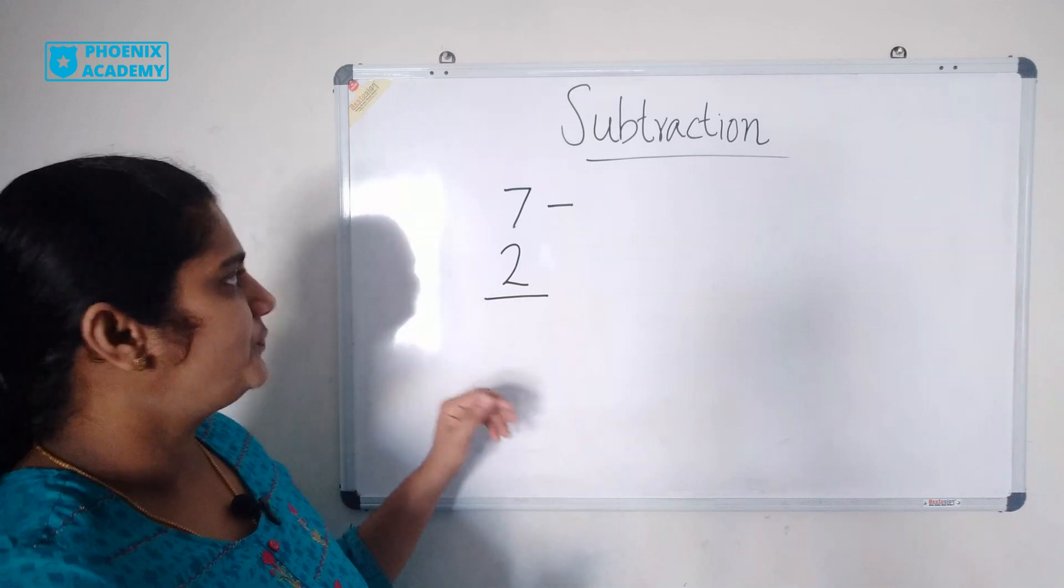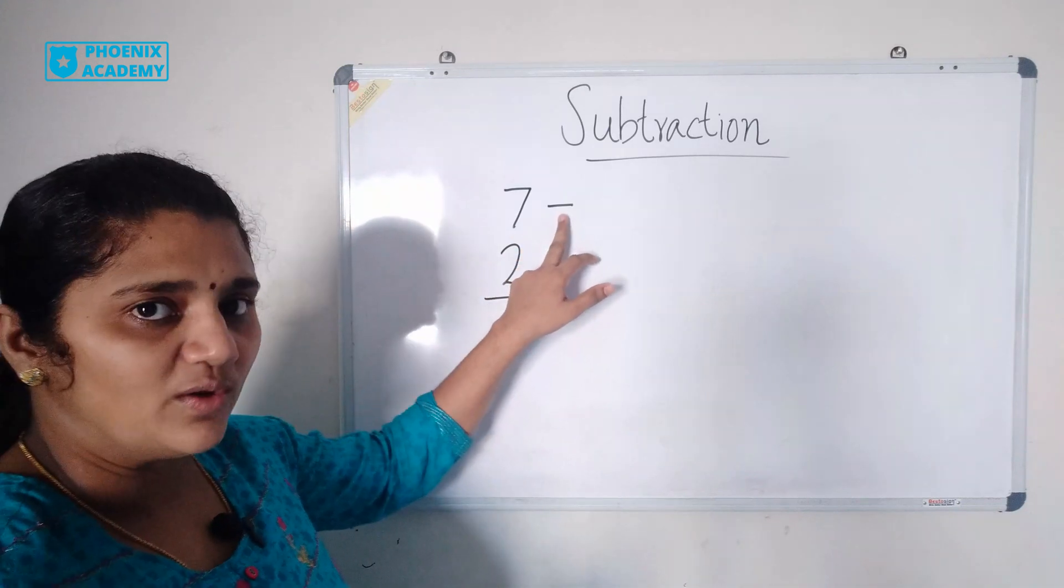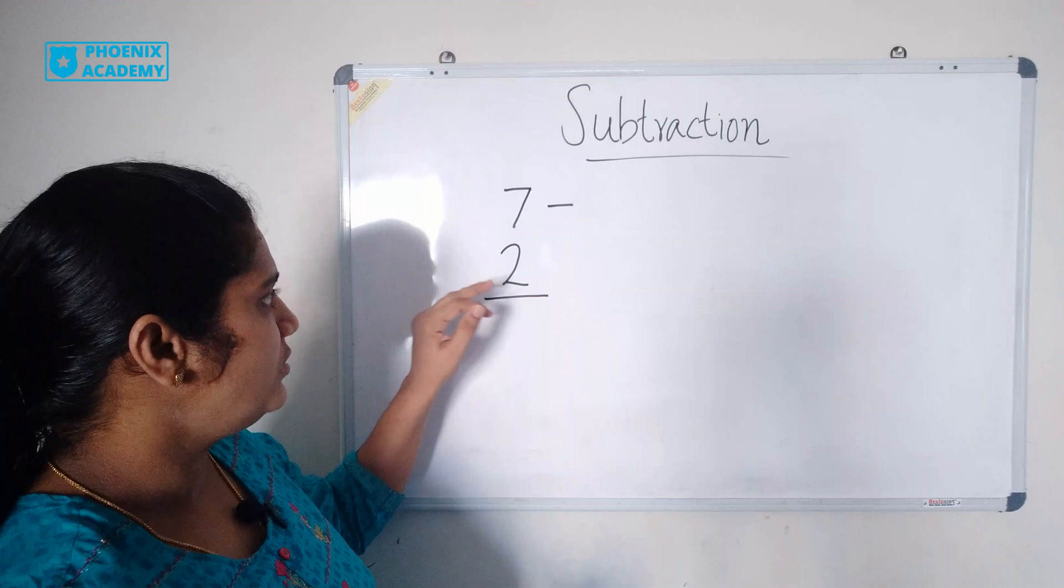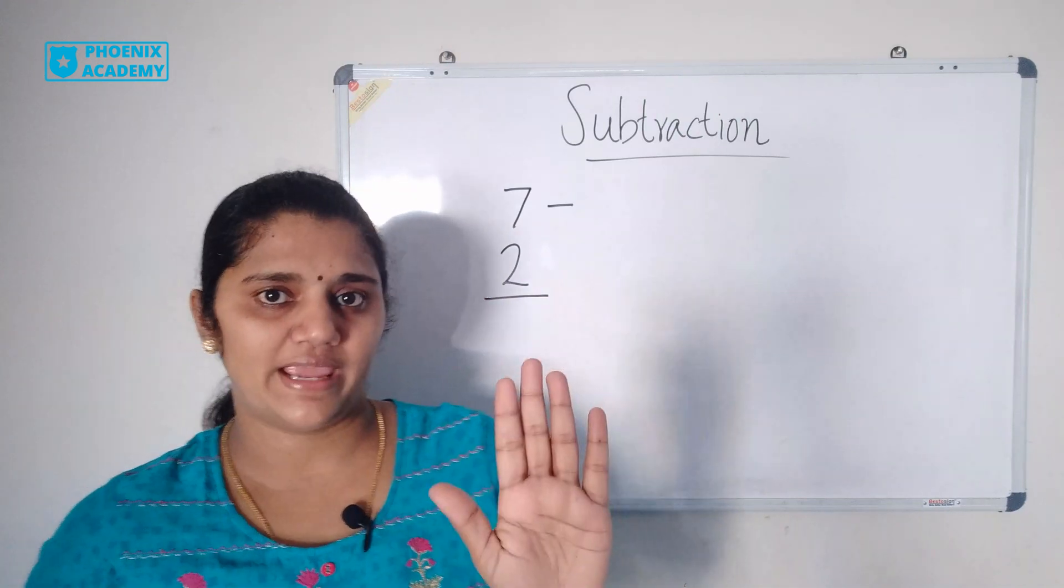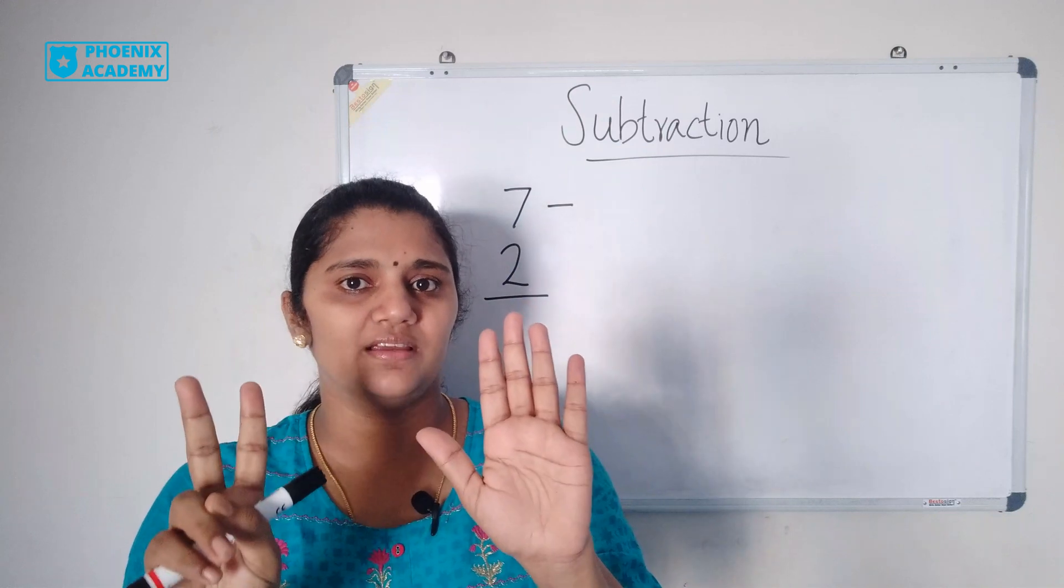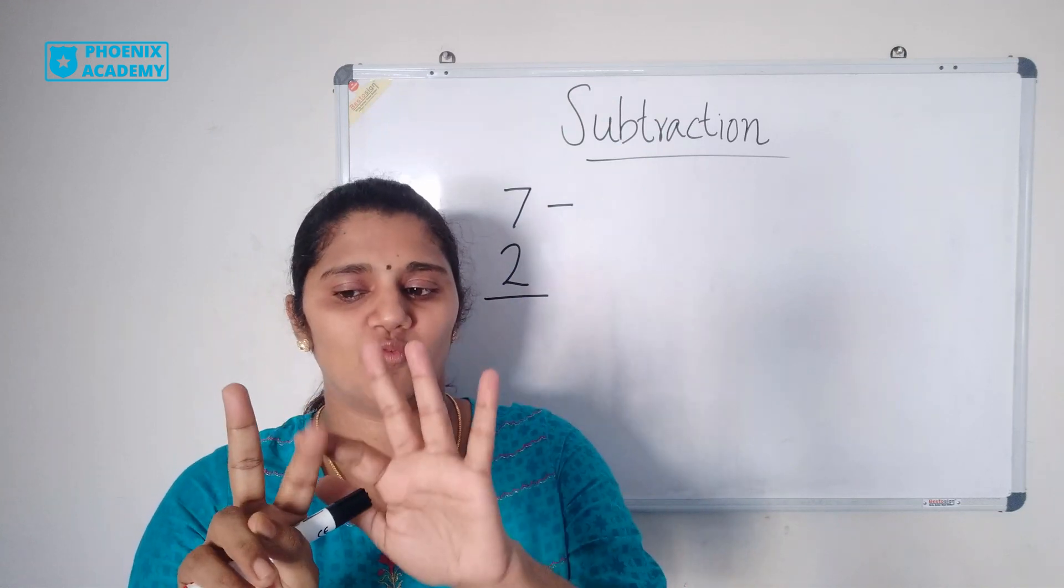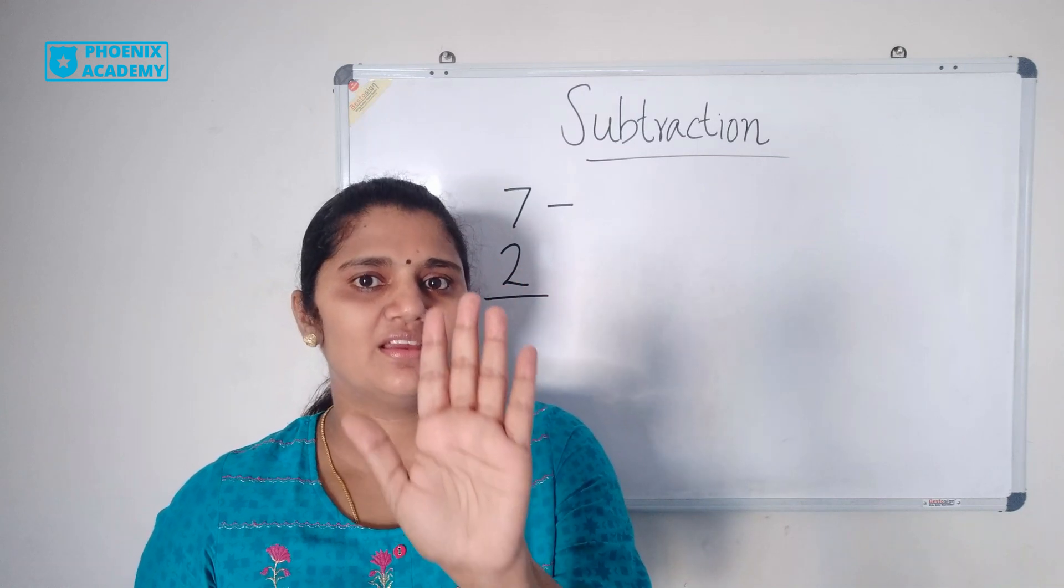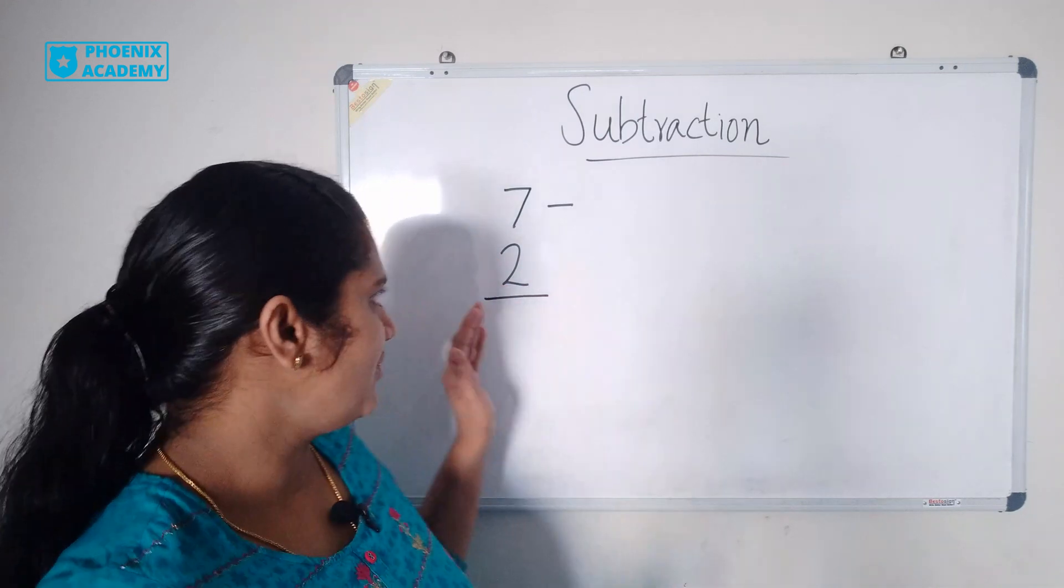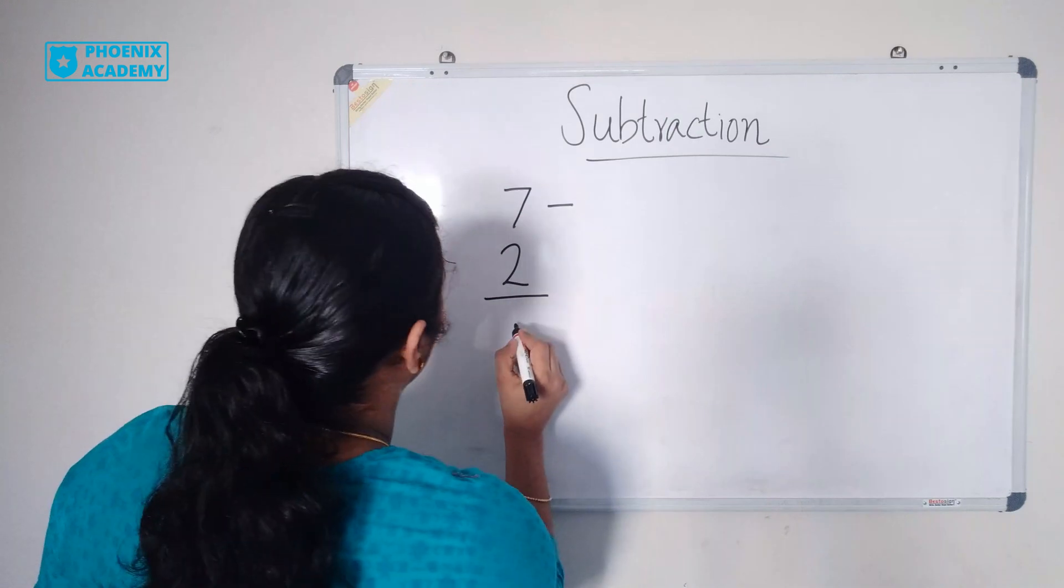7 minus 2. This is the sign of subtraction. How you subtract 2 from 7? You take 7 in your hand and subtract 2. 1, 2. Then how many fingers remaining? 5. So 7 minus 2 is 5.